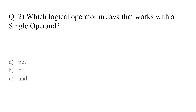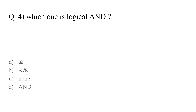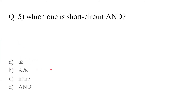Question number twelve: which logical operator in Java works with a single operand? The answer is the NOT operator. Question number fourteen asks for the symbol of the NOT operator. Question number fifteen: which one is the short-circuit AND? The answer is option B — the double ampersand (&&) is the short-circuit AND, while the single ampersand (&) is logical AND.